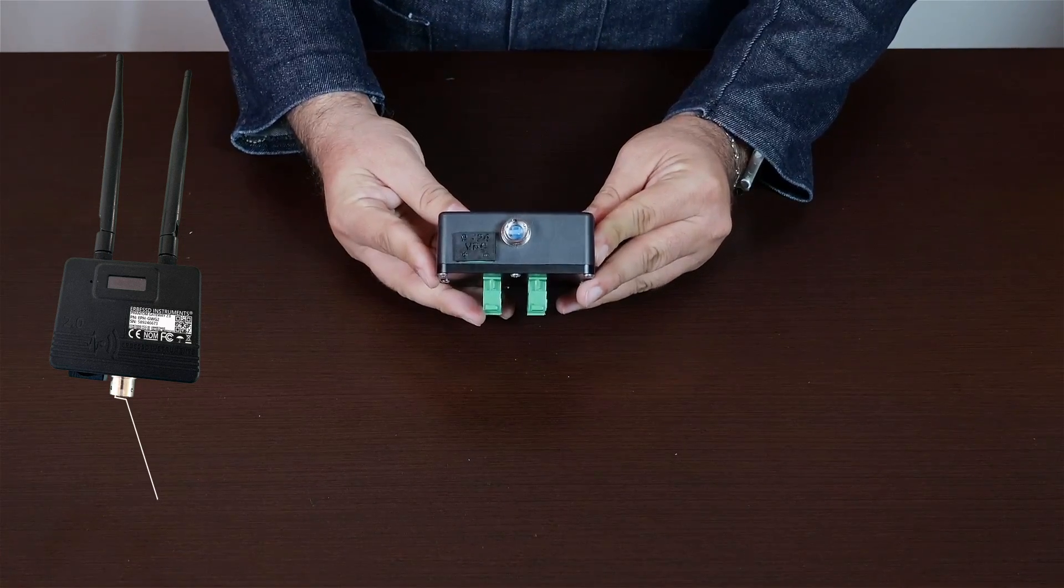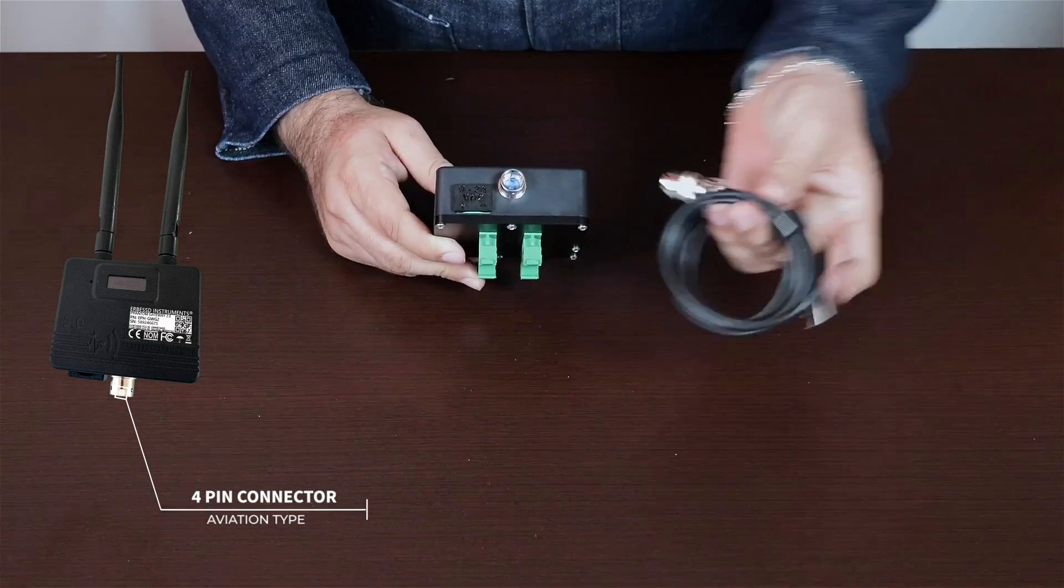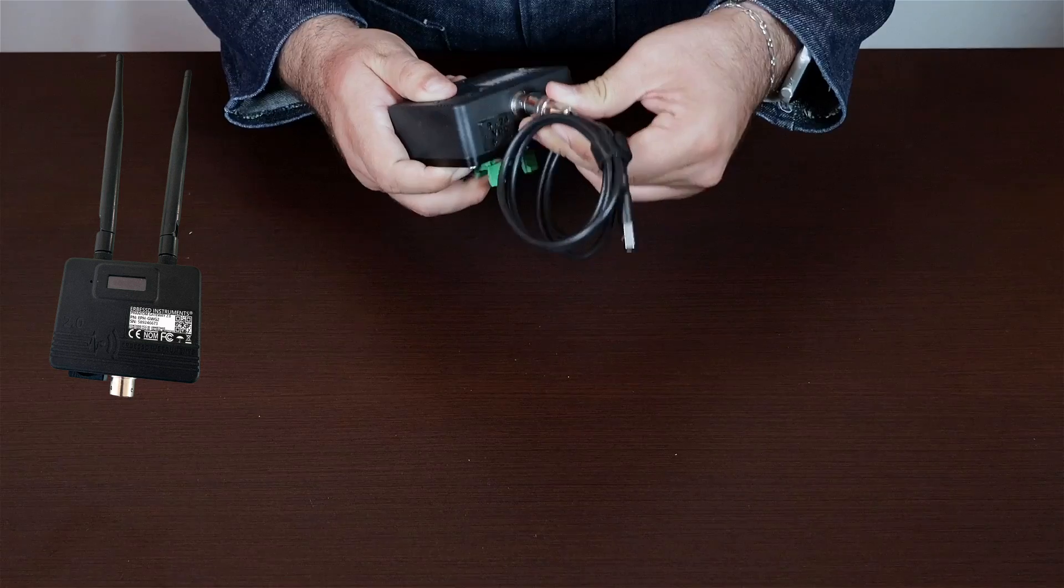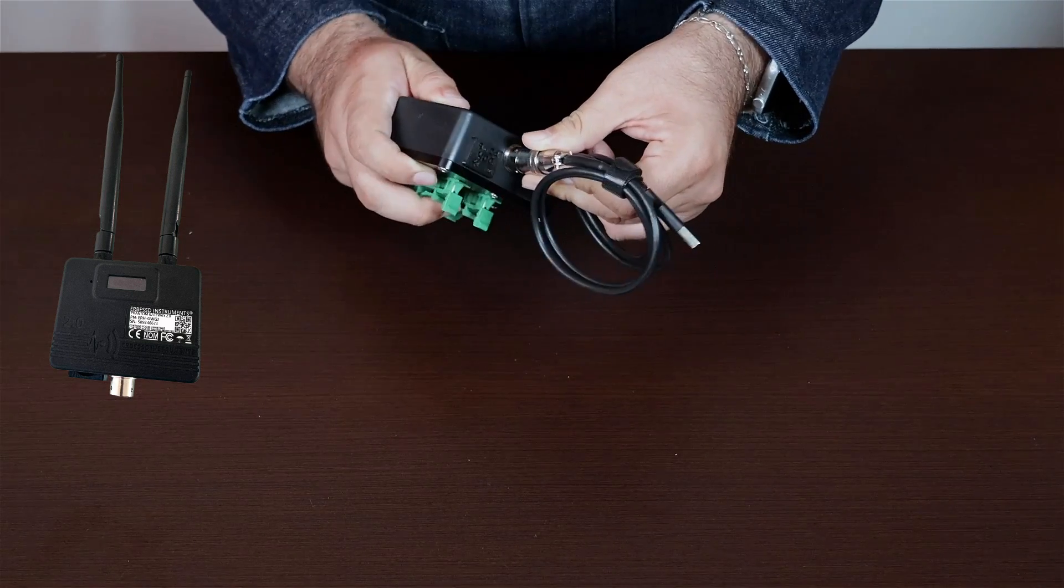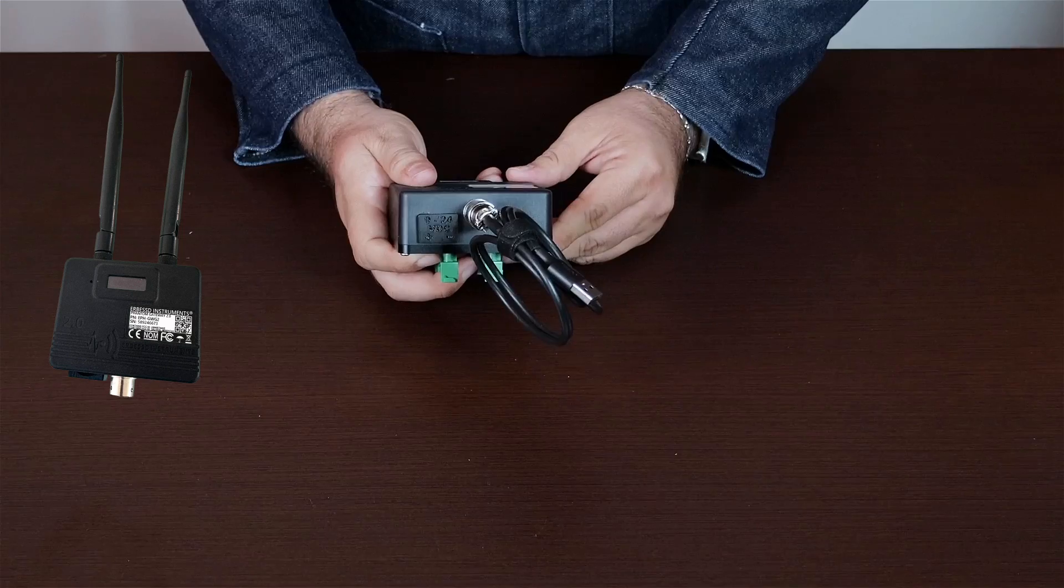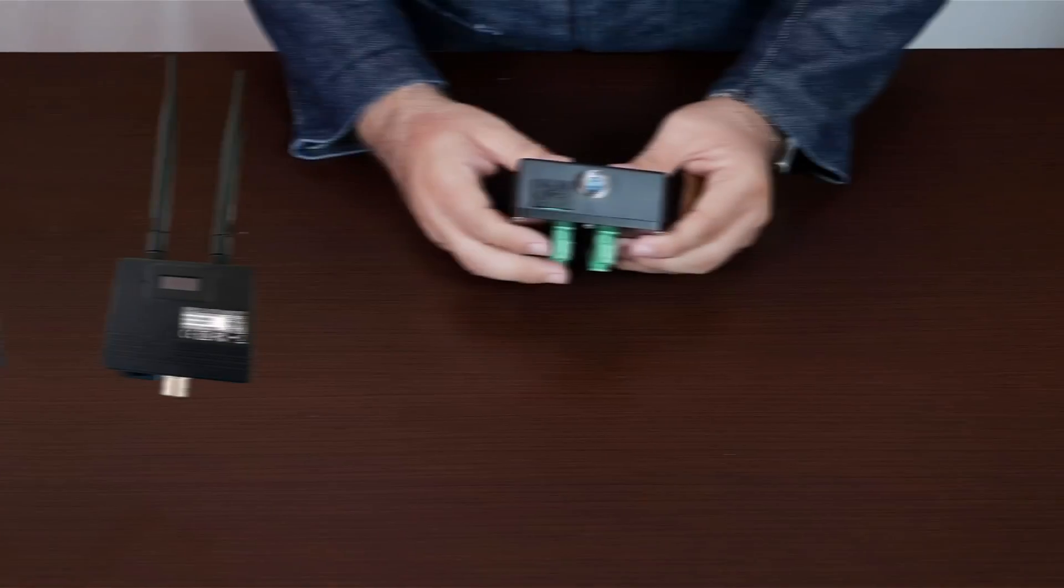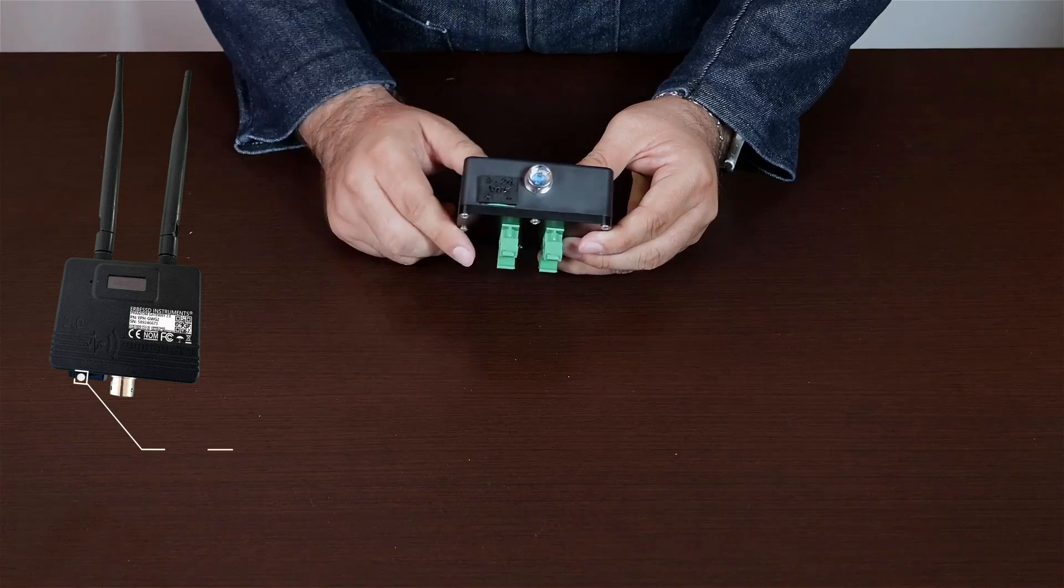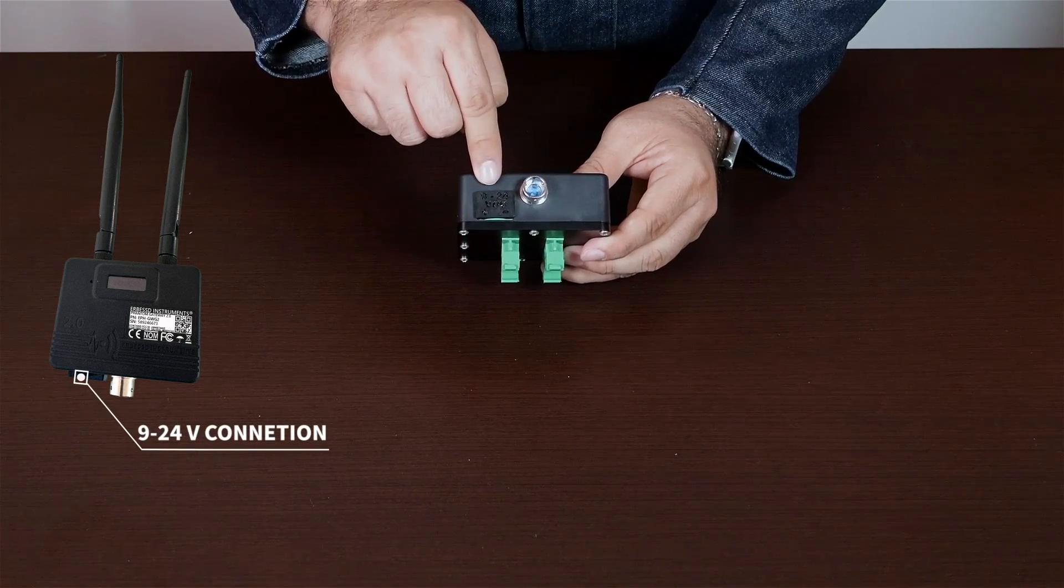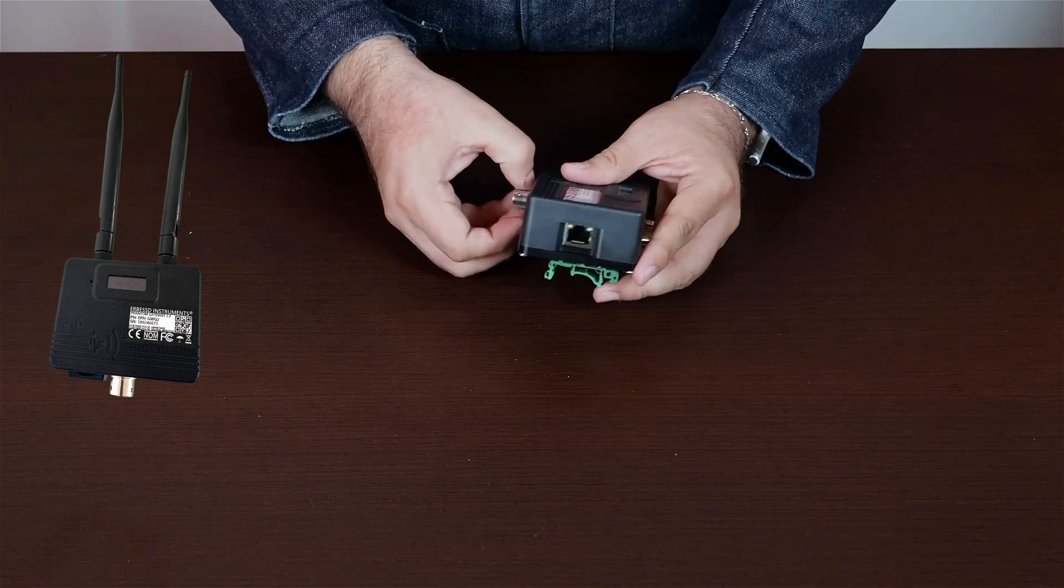At the bottom, you will find other power options. There is an input compatible with the included power connection cable. To remove it, just pull it slightly. Additionally, there is a 9-24V power option, which is covered by a cap. You can remove the cap by applying a little pressure to access the 9-24V connection options.